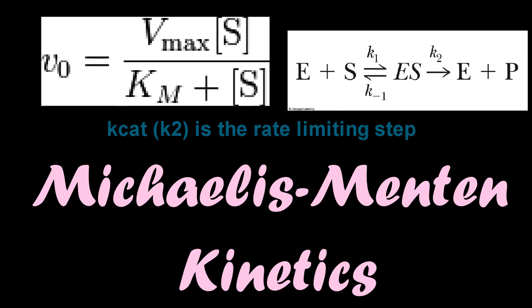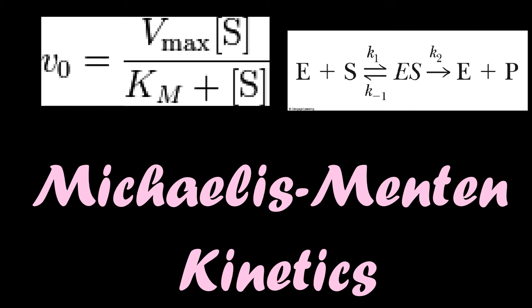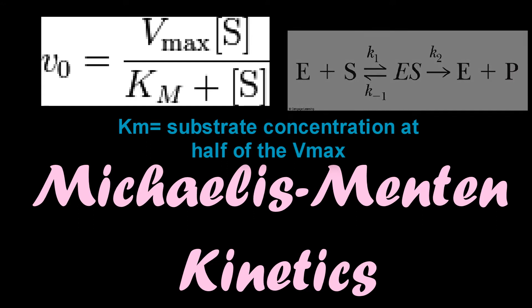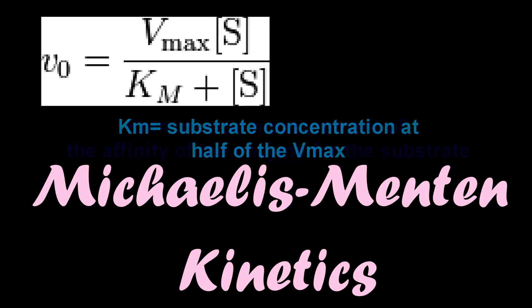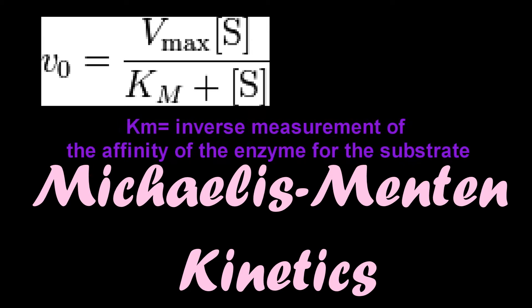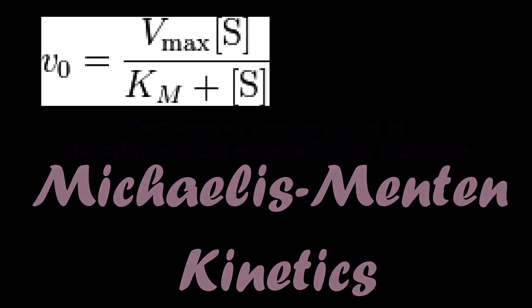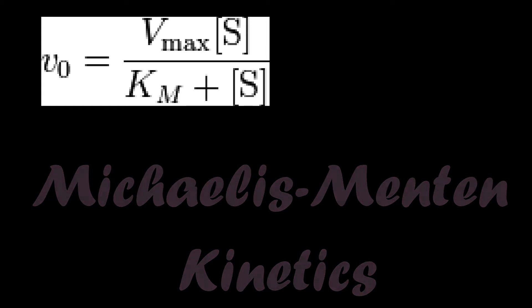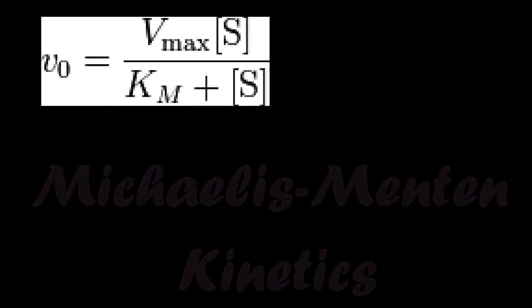If it's the slowest reaction, then that's all that matters when we're talking about velocity. The substrate concentration at one-half of the Vmax is the K sub M. This is an inverse measure of the affinity of the enzyme for the substrate, and it can be used to determine differences between enzymes. The lower the Km, the higher the affinity. When the rate of a reaction is half of the Vmax, the substrate concentration is going to be equal to the Km.